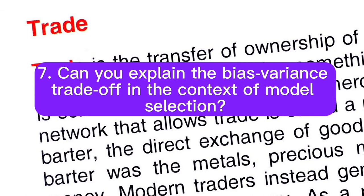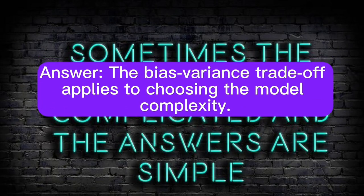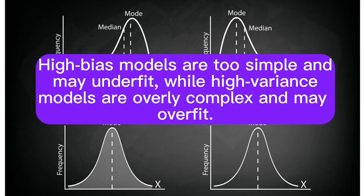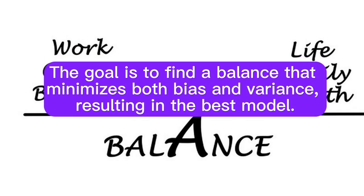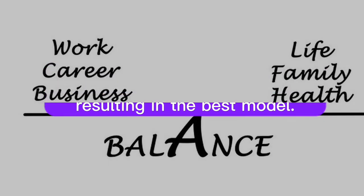Question 7: Can you explain the bias-variance trade-off in the context of model selection? Answer: The bias-variance trade-off applies to choosing the model complexity. High-biased models are too simple and may underfit, while high-variance models are overly complex and may overfit. The goal is to find a balance that minimizes both bias and variance, resulting in the best model.